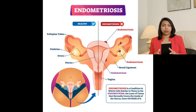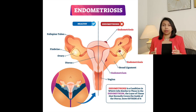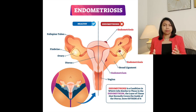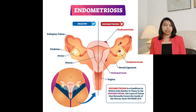Endometriosis is a condition when the tissues similar to the lining of your uterus grows outside the uterus. It can grow on your tubes, ovaries, bowels, bladder, and also the peritoneum, which is the lining that covers all the organs of your body. These tissues behave in a similar way as the lining of the uterus — that is, they grow and they bleed during your period.